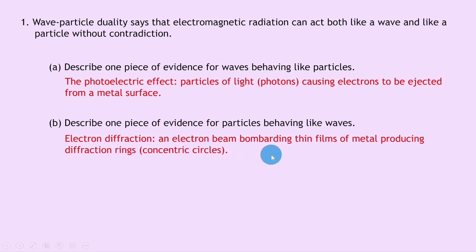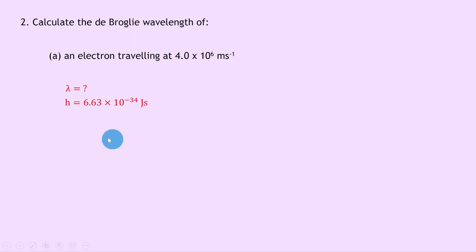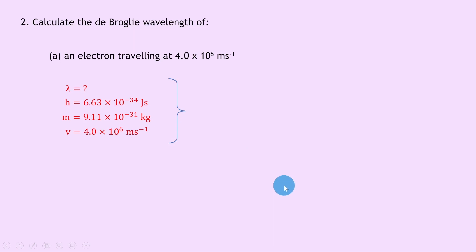Question two says to calculate the de Broglie wavelength of an electron traveling at 4.0 times 10 to the 6 meters per second. Writing down what we know: we're trying to find lambda. Planck's constant h is 6.63 times 10 to the minus 34 joule seconds, the mass of an electron is 9.11 times 10 to the minus 31 kilograms, and the speed v is 4.0 times 10 to the 6 meters per second.